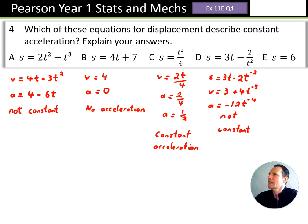Finally, E then, we've got S purely equals 6. Well, our velocity is 0, this is actually stationary. Our acceleration will be 0 as well. So this has got no acceleration.